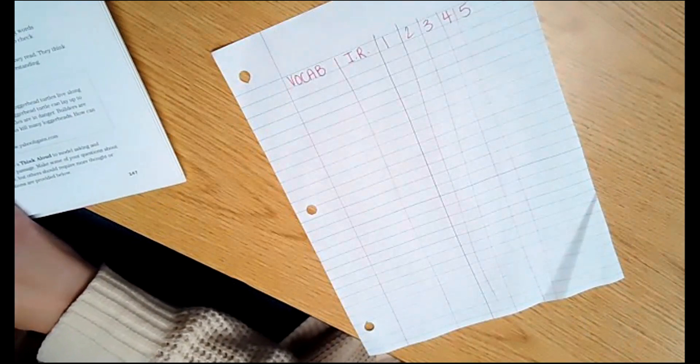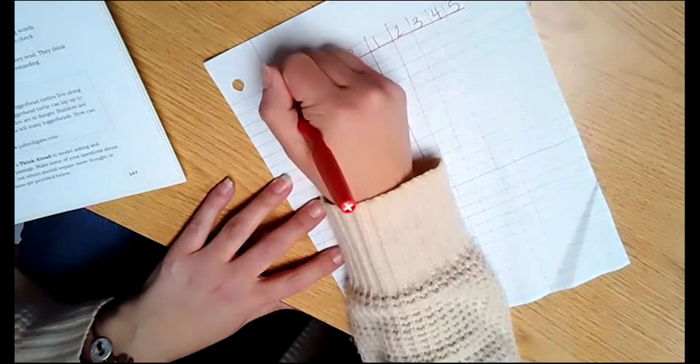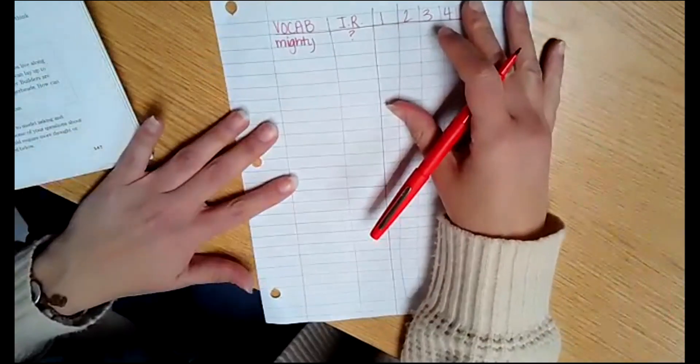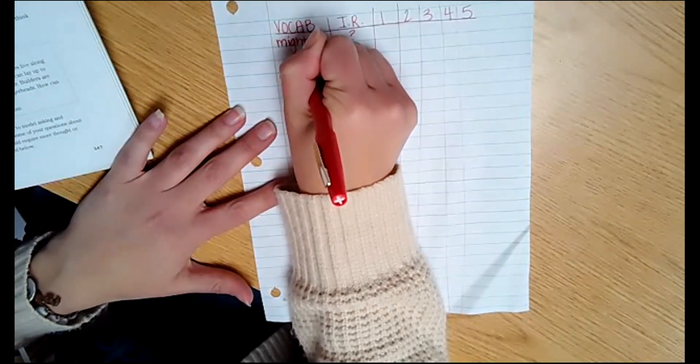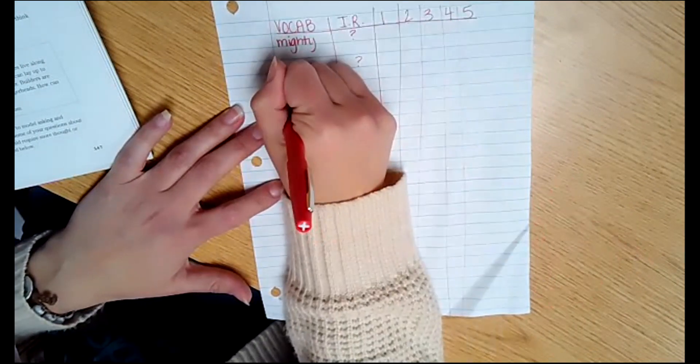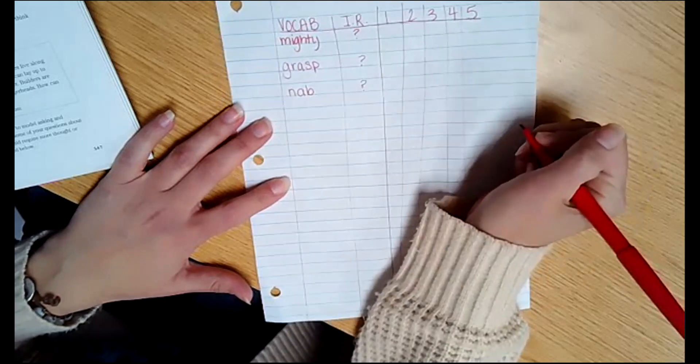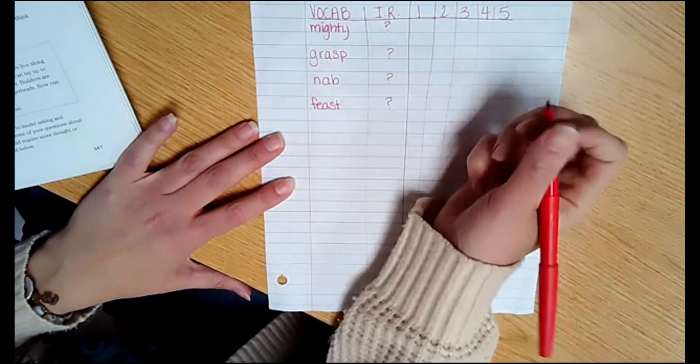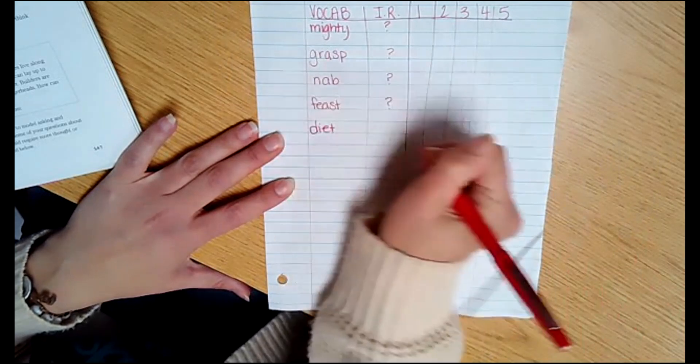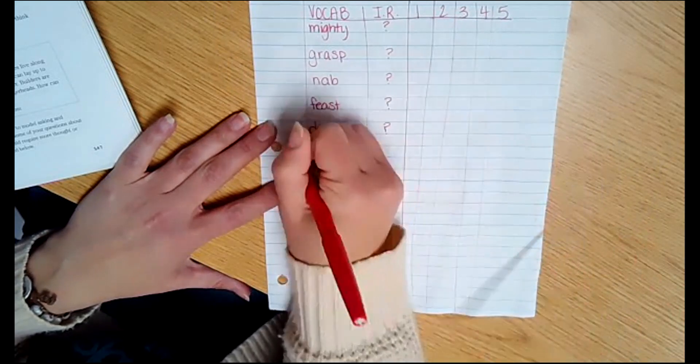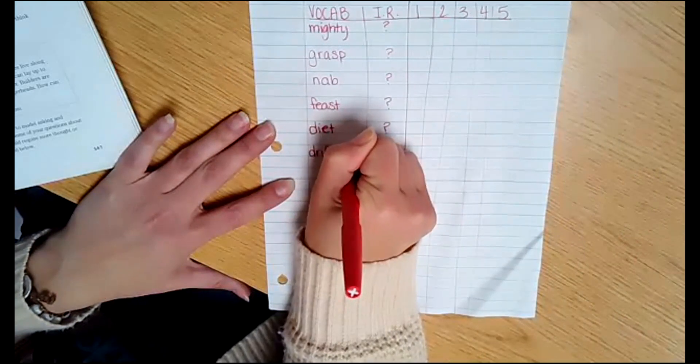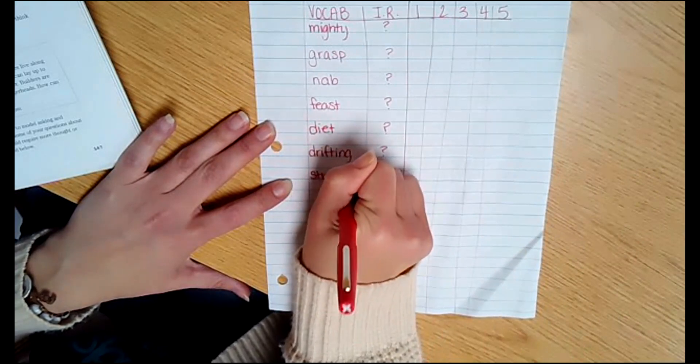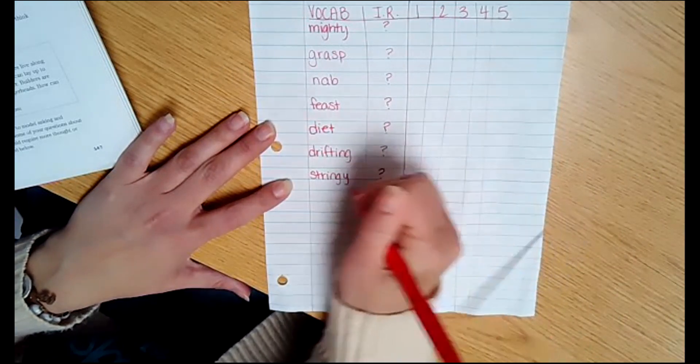Our first word is mighty. If you know the word mighty you're going to put a plus if you're not sure you're going to put a question mark. I'm going to put a question mark on all my if you know it go ahead and put a plus. The next word is grasp plus if you know it question mark if you're not sure. Then we have nab. Then we have feast. Diet. Drifting. And stringy. And then the last one is escape.